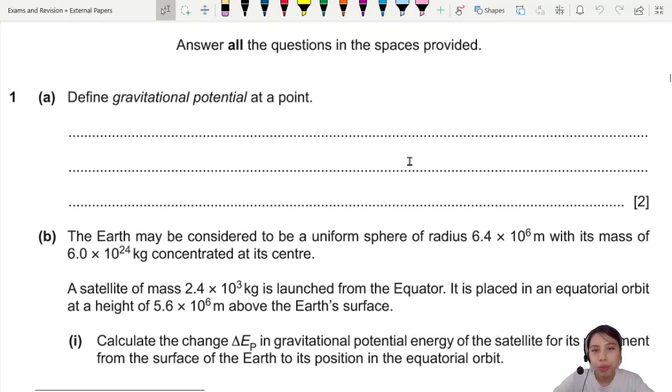This is ON20 paper for variant 2, starting with question 1. Gravitational potential at a point. If you have a mass, you have gravitational potential.